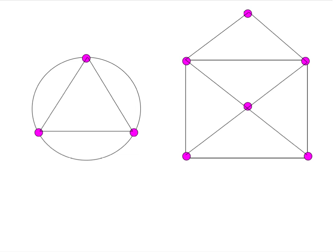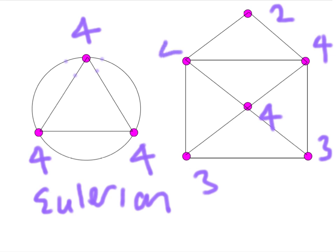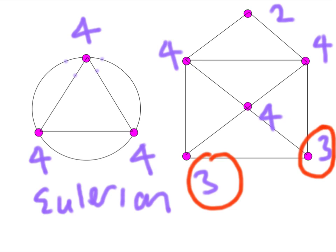Now we look at two new graphs and decide whether they're Eulerian, semi-Eulerian, or neither. Counting arcs at each node on the left graph: order four, order four, order four — all nodes are of even order, so this is an Eulerian graph. On the right-hand graph the orders are two, four, three, three, four, four — just two nodes of odd order, so this is a semi-Eulerian graph.